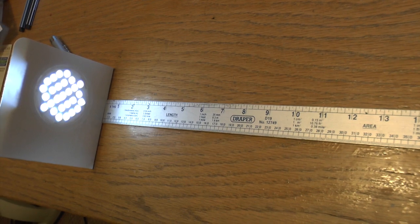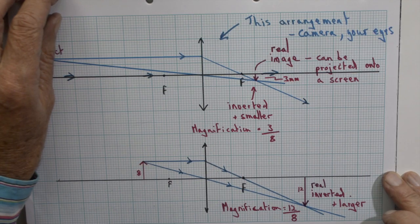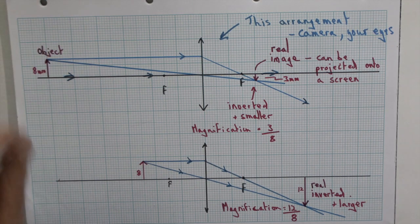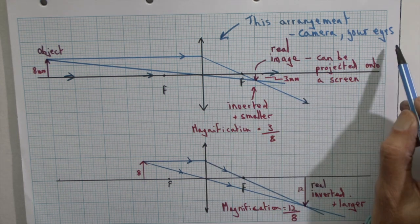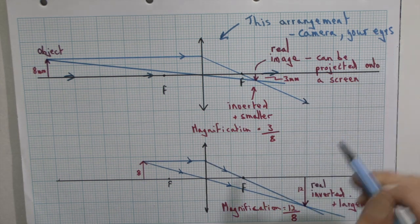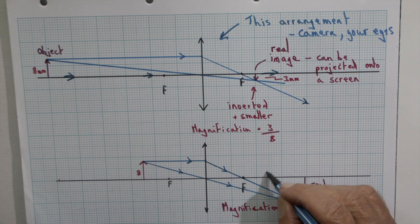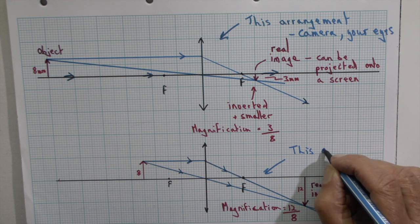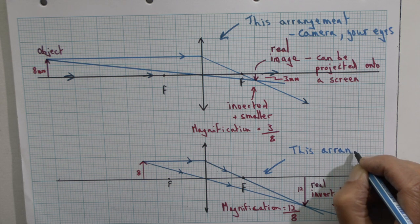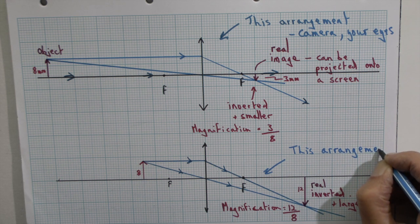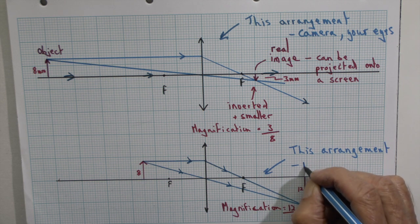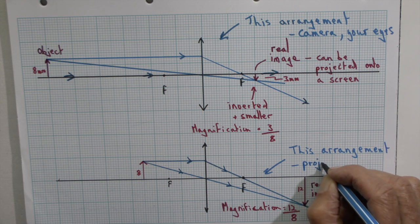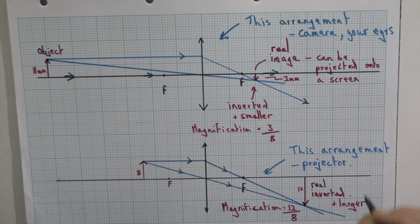These two arrangements of a simple convex lens or converging lens have two applications. The first arrangement is used in cameras and it applies in your eyes as well. The lens in your eye producing an image on the retina. The second arrangement is used in projectors such as cinema projectors and that is where a small object or picture is enlarged, is projected onto a large screen.